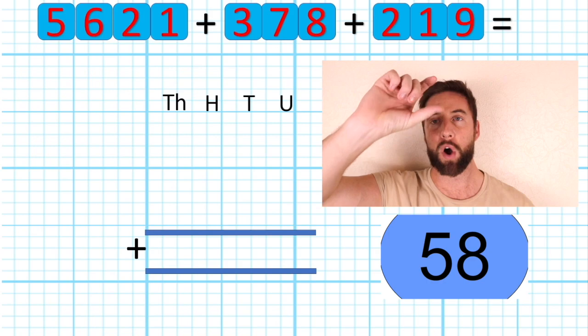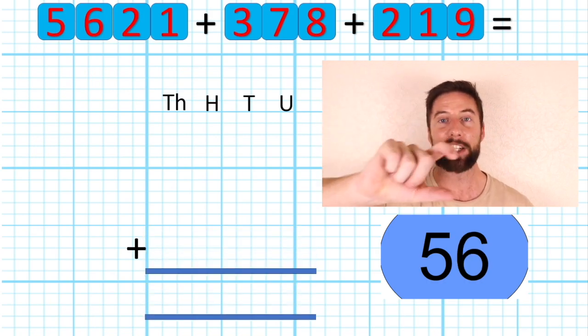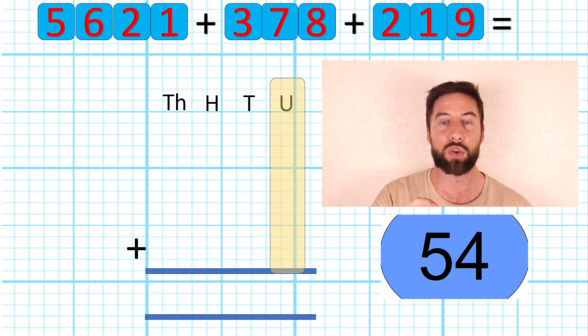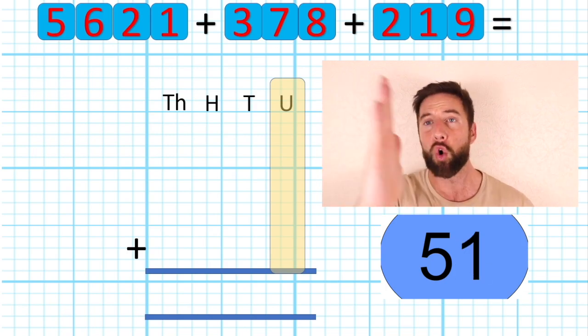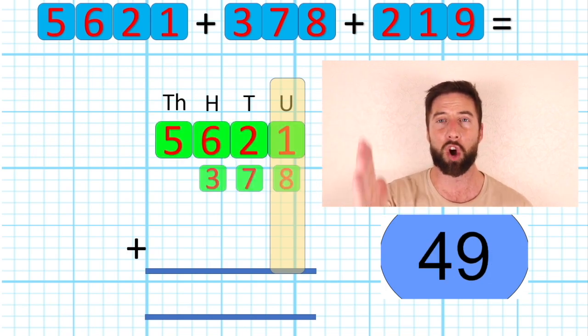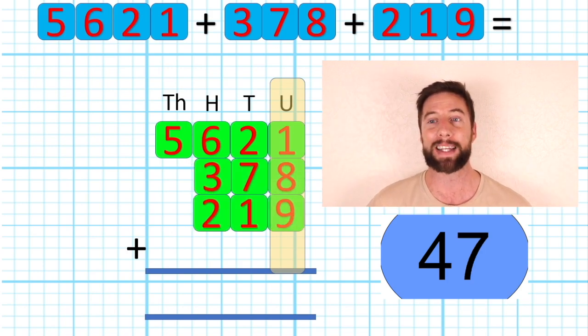Okay, so the first thing we need to do is make sure we put our numbers in the correct columns in the right places. The best way to do that is make sure that we are putting our smallest value, which is units in this case, all in the right place, all in the units column and everything else will fill up automatically.